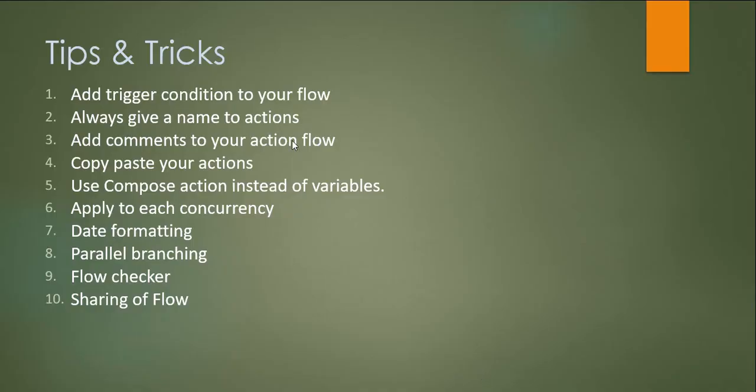The first tip is to add a trigger condition to a flow. What that means is you would not like your flow to trigger every time even when it's not required. For example, if you have an approval list where business users enter data and approvers, and after they submit or check the 'send for approval' option, then only that flow should start.